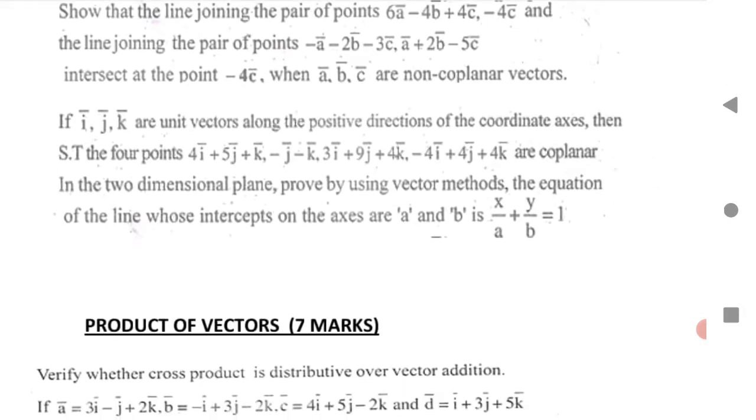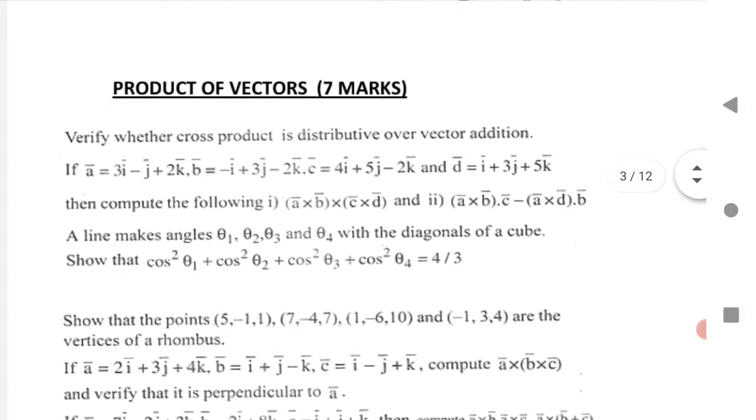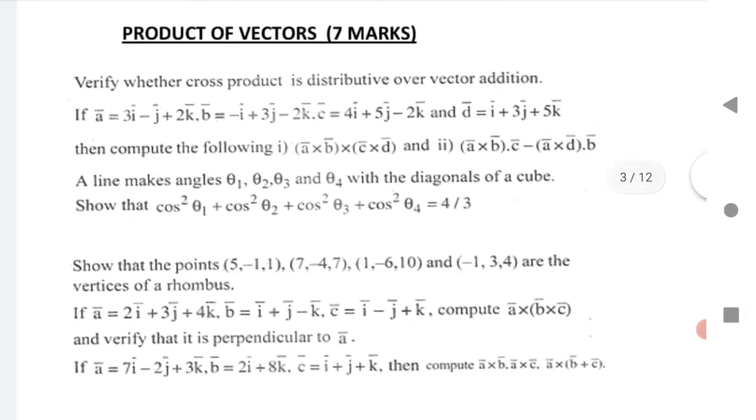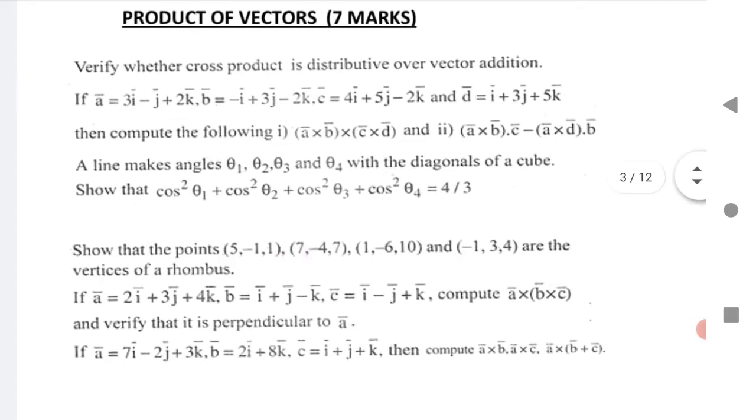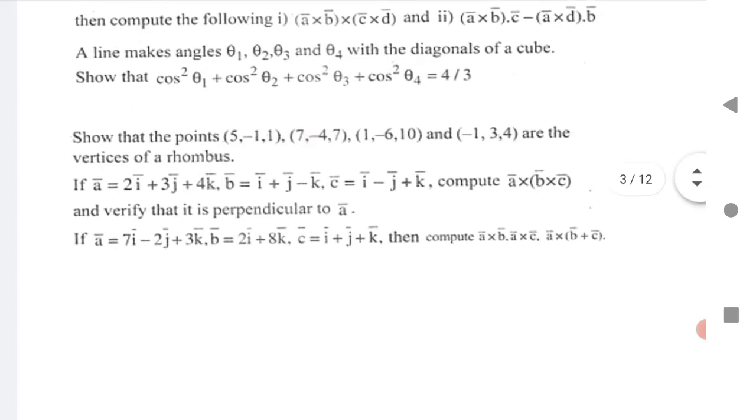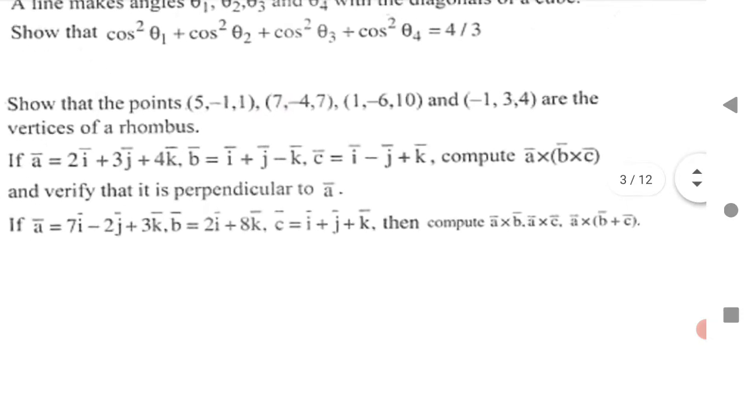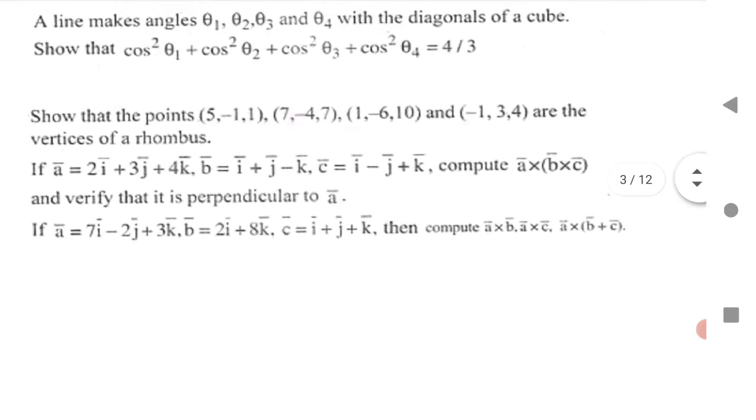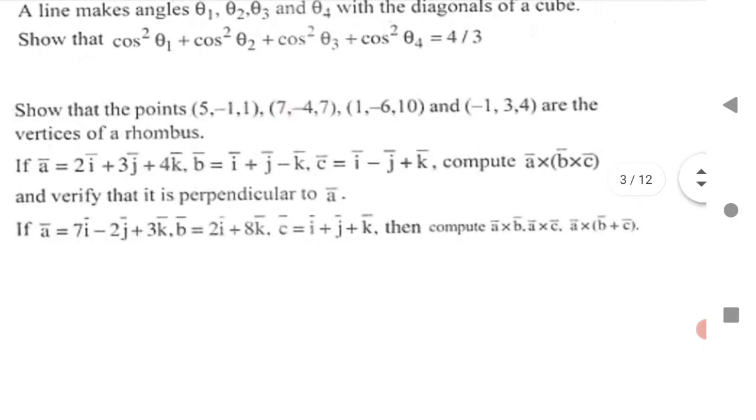Next is Product of Vectors, very important questions. Question one is very important. Question two: the line makes an angle. Third: show that the points are vertices of a rhombus. Fourth: if vector a and vector b are given, compute. Fifth: vectors a, b, and c are given, compute a×b and a×c, then (a×b)·(a×c), and a×(b+c). These are the questions for product of vectors.